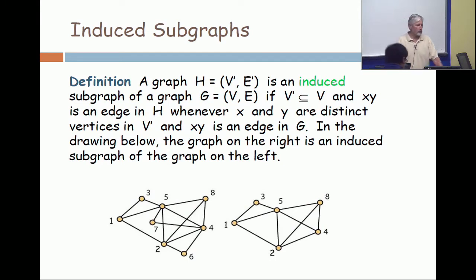and the first concept for today is the notion of an induced subgraph. So given a graph G, another graph is an induced subgraph. First of all, it is a subgraph, but most importantly, every possible edge that could be present is present. So I show on the left a graph with vertex set 1 through 8,